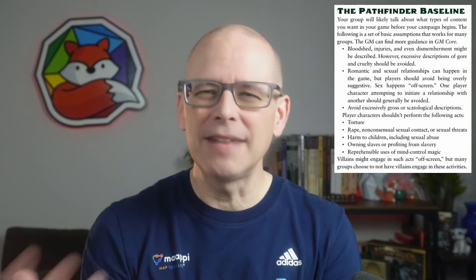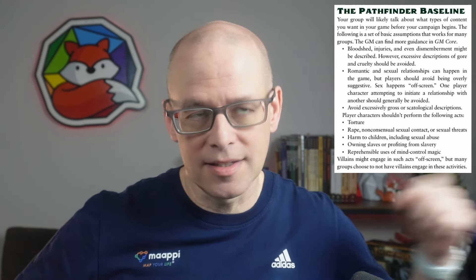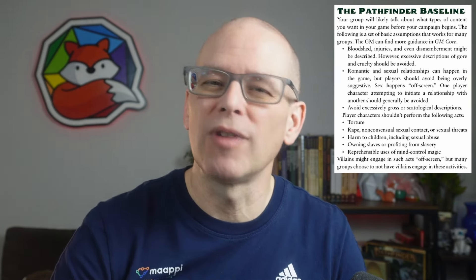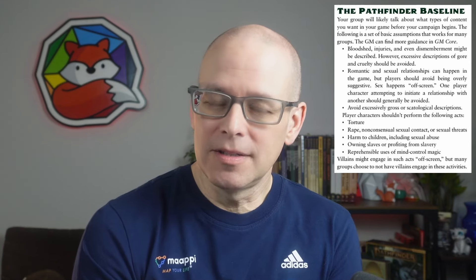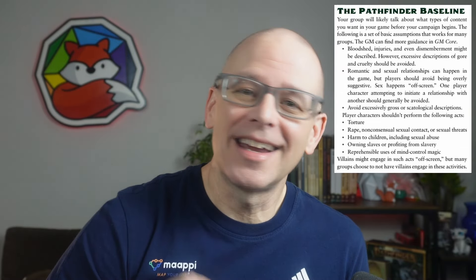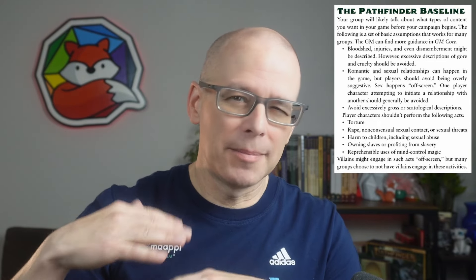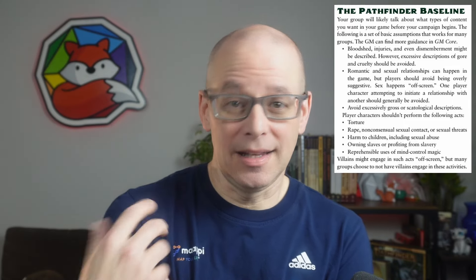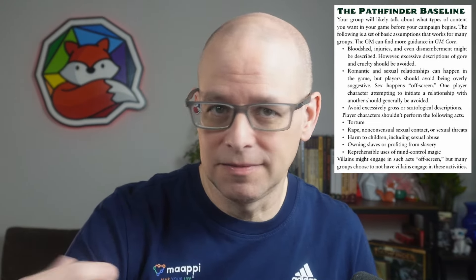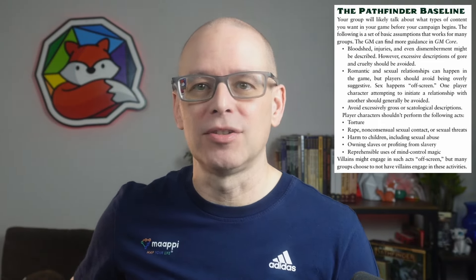I know that slavery was kind of a contentious issue going from Pathfinder first edition to second edition, simply because it existed more in Pathfinder first edition and was kind of taken out during second edition. And then there are things like reprehensible uses of mind control magic. Generally speaking, if you're the good guys, you're fighting evil creatures; if you're evil, you might be fighting good creatures. This is a game of heroes, and you are generally a hero in your own mind at least. Their exact words are: villains might engage in such acts off-screen, but many choose not to have villains engage in these activities in live descriptive text. So there could be things that happen, but it doesn't necessarily mean you have to describe them happening.